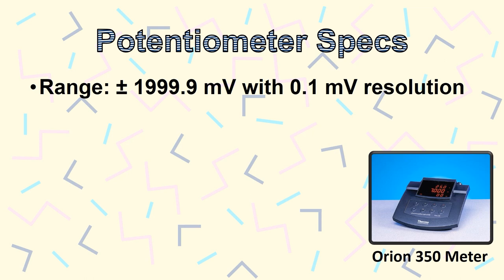For example, the potentiometer can only measure plus or minus 2 volts, with a resolution of 0.1 millivolts. If you try to measure something outside the range, you'll see this error on the display, which also occurs if the electrodes are out of the solution, so don't be alarmed if you see that.